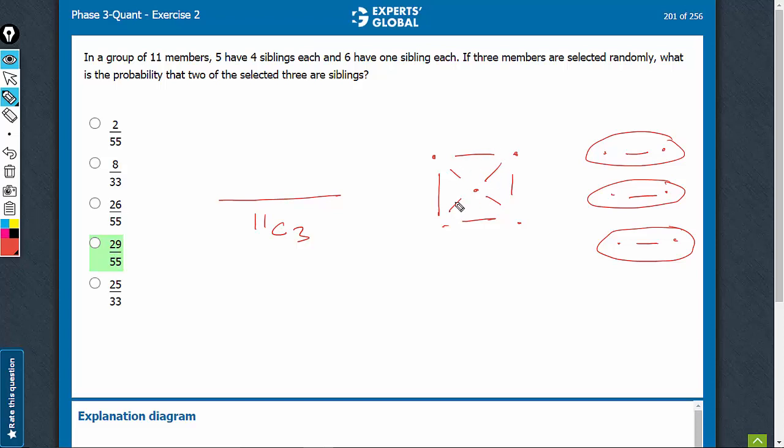So, if 2 happen to be out of these 5, this can be done in 5C2 ways. And the 3rd person can be any of these 6 people. Remember, the other 3 cannot be chosen. The 3rd person can be any 1 of these 6. So, that's 1.